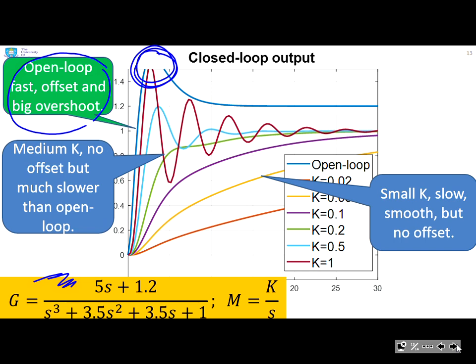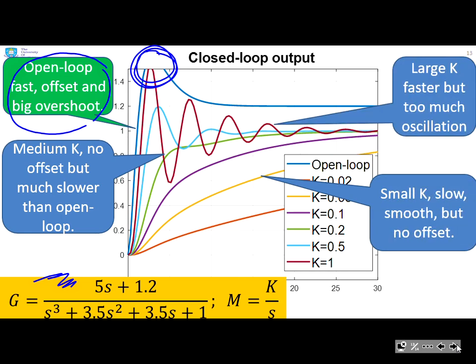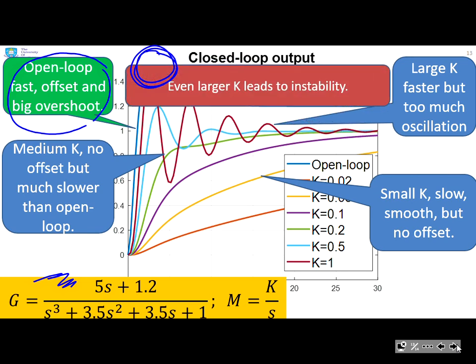What happens if we use medium k? Well, it's a bit faster. That's OK. But it's still an awful lot slower than the open loop. Here, probably a factor of 4 or 5 slower than the open loop. So I still might not be too happy with that. If I increase k a bit more to try and get more speed of response, yes, it is a bit faster. But now I'm getting too much oscillation. And if you make k even larger, again, you get instability.